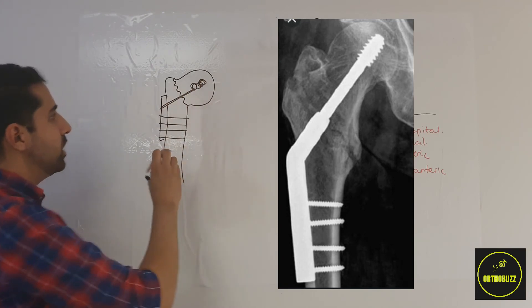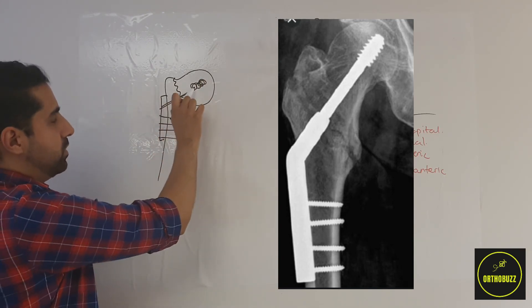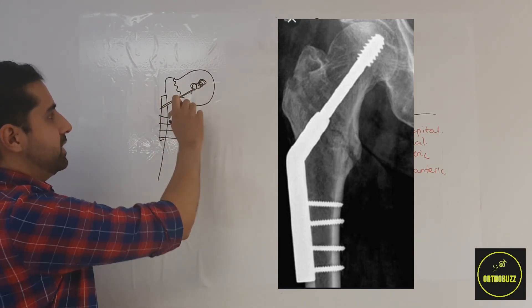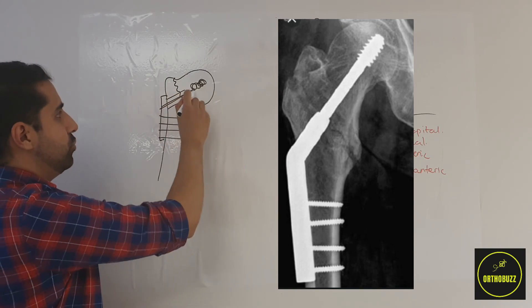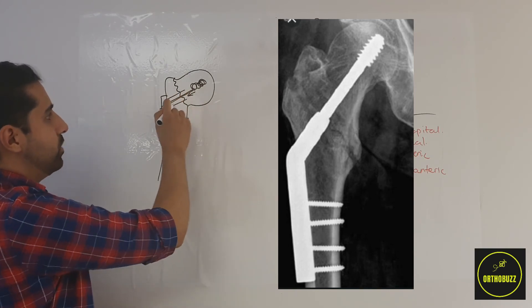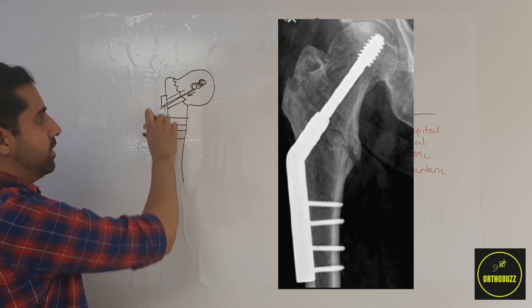Where we have a screw going across the fracture site into the head of the femur to fix it and allow controlled sliding down the barrel of the plate.